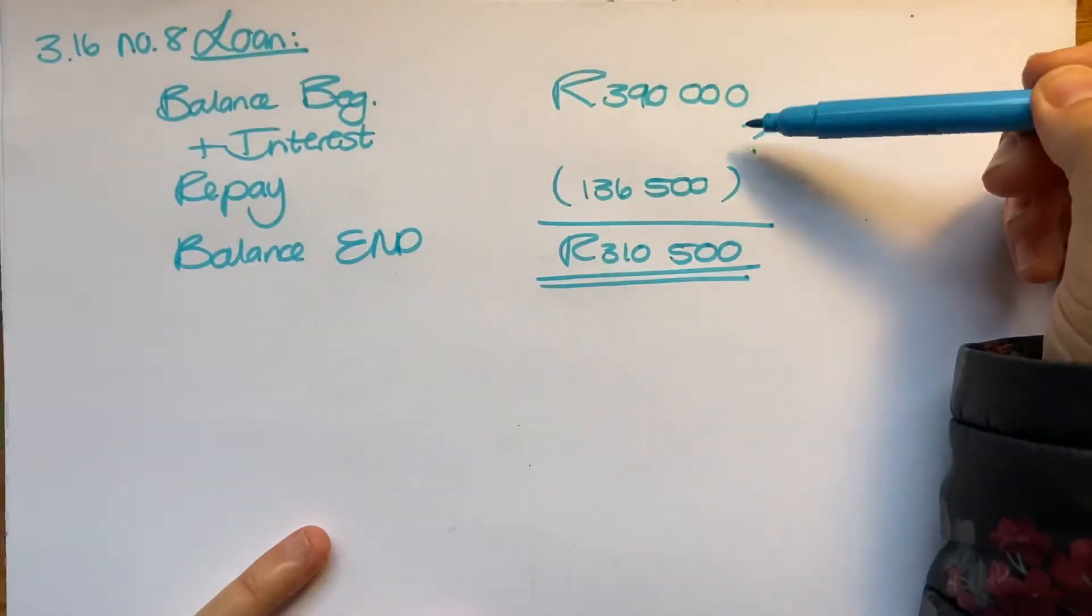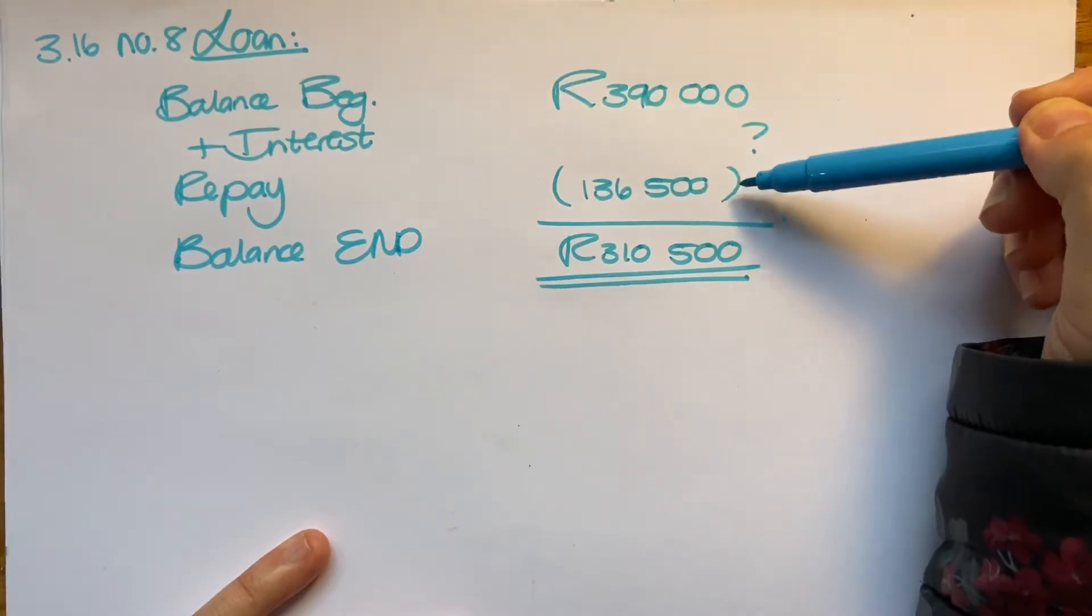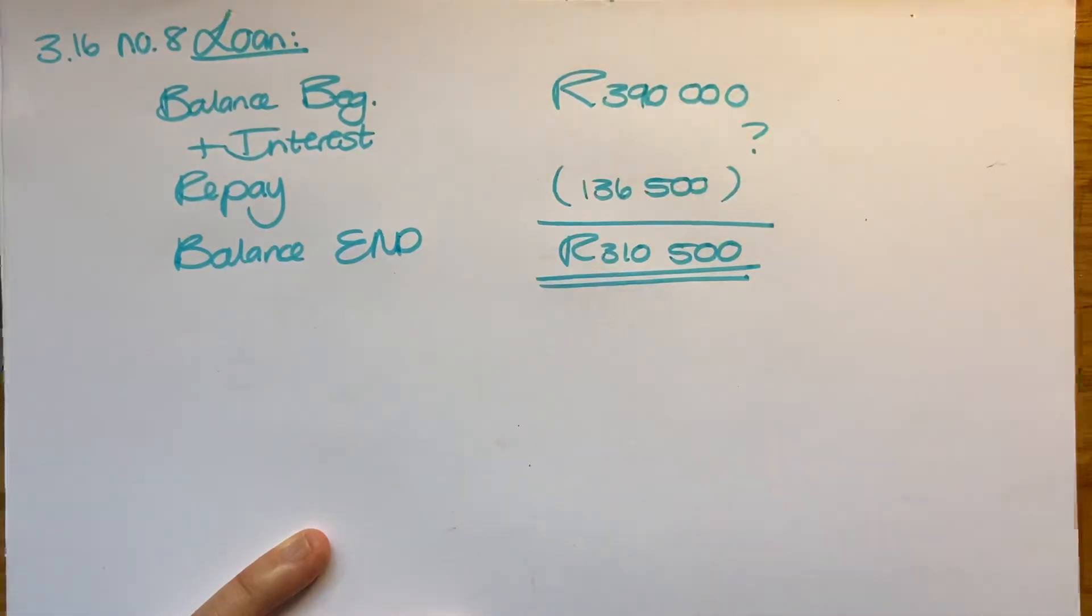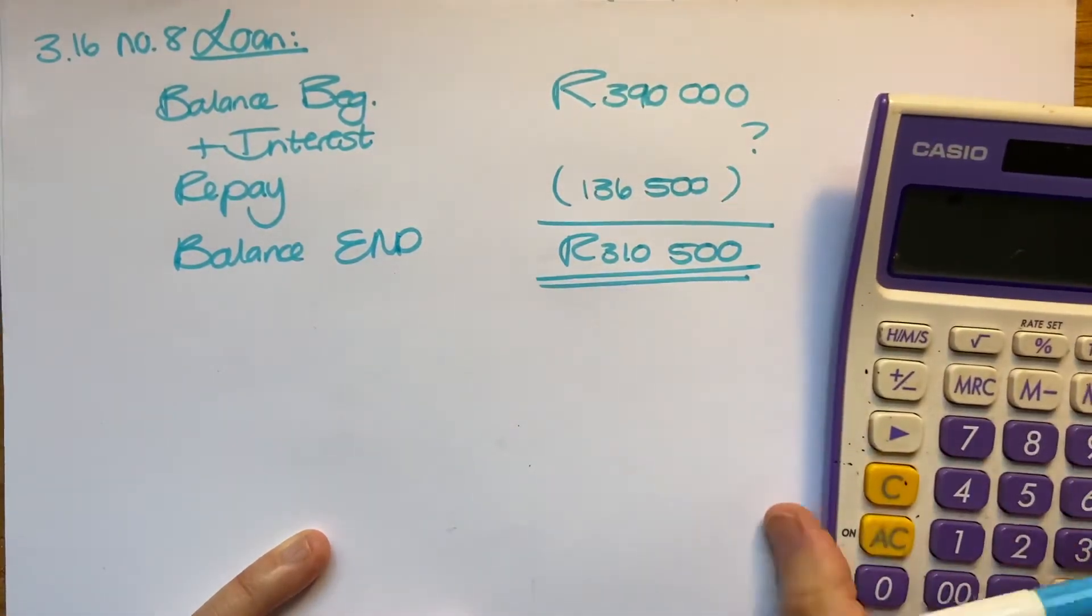So during the year I added something, which was interest. Luckily I minus this and I ended up with 310. So you need to work out what the interest was for that. What you would do is you work from the bottom to the top, or jump between them, but I would start with 310,500.